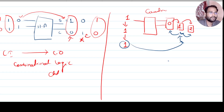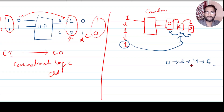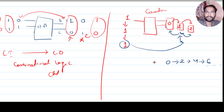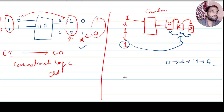That can be another example — it can count 0, then 2, then 4, then 6, like that it can go on. We can design a circuit for that also. We will see further how we can design this sequential logic circuit. This is the whole idea of what is a combinational logic circuit and what is a sequential logic circuit.